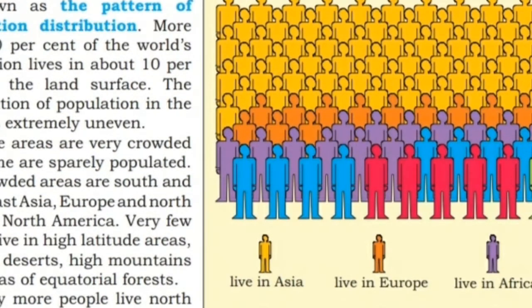Now let's read the paragraph on distribution of population given on page number 67. The way in which people are spread across the earth's surface is known as the pattern of population distribution.